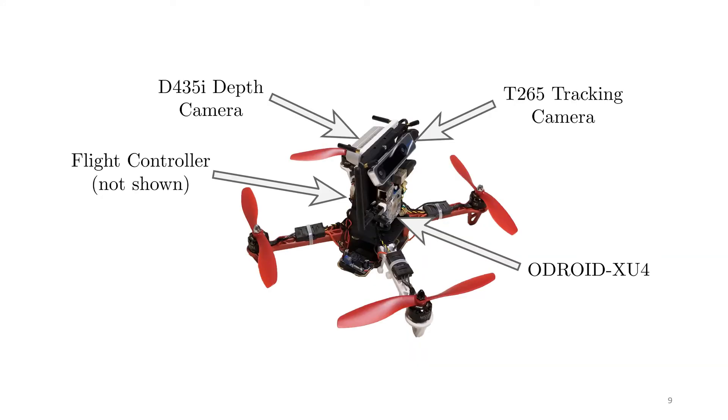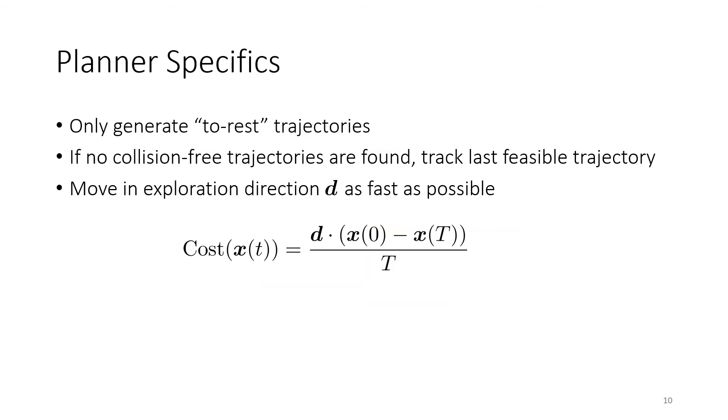So hopefully I've convinced you that this collision checking method is fast, but the real question is, does it work in real life? And so we developed this experimental platform to show that. Here we're using a D435i depth camera to capture depth images, a T265 tracking camera to give us pose estimates for our planner, and then we're doing all computation on board an Odroid XU4.